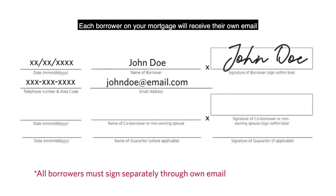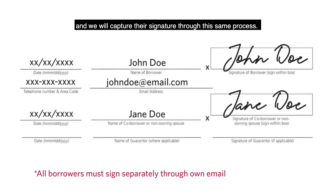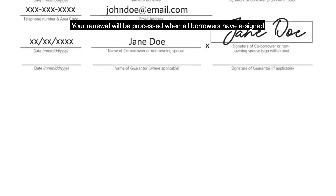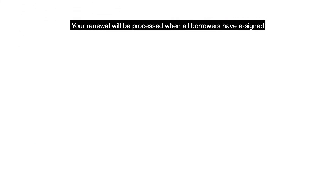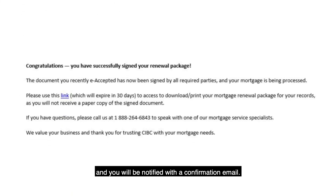Each borrower on your mortgage will receive their own email and we will capture their signature through this same process. Your renewal will be processed when all borrowers have e-signed and you will be notified with a confirmation email.